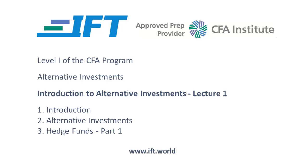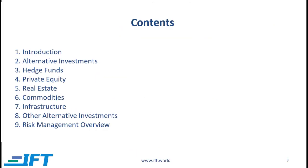In this lecture, we will go over the Level 1 reading on Introduction to Alternative Investments. This is a very long reading. In the first two sections, we will cover an overview of alternative investments. Then in sections 3, 4, 5, and 6, we will spend a lot of time on four major subcategories: hedge funds, private equity, real estate, and commodities. Then there is a brief section on other alternative investments and finally some discussion on risk management related to alternative investments.